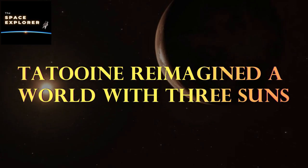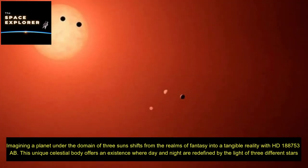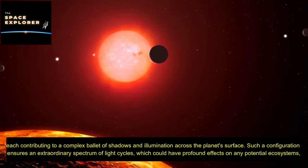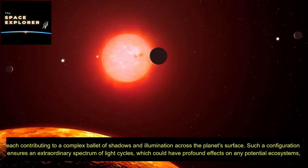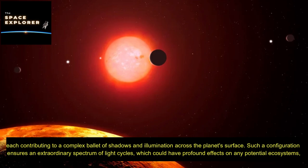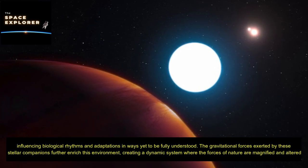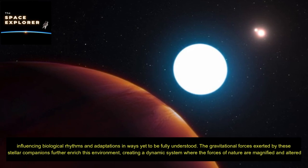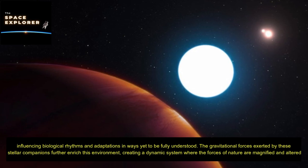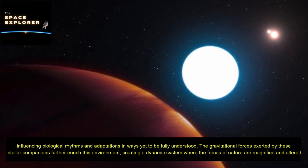Tatooine reimagined: a world with three suns. Imagining a planet under the domain of three suns shifts from the realms of fantasy into a tangible reality with HD 188,753 AB. This unique celestial body offers an existence where day and night are redefined by the light of three different stars, each contributing to a complex ballet of shadows and illumination across the planet's surface. Such a configuration ensures an extraordinary spectrum of light cycles, which could have profound effects on any potential ecosystems. The gravitational forces exerted by these stellar companions further enrich this environment.